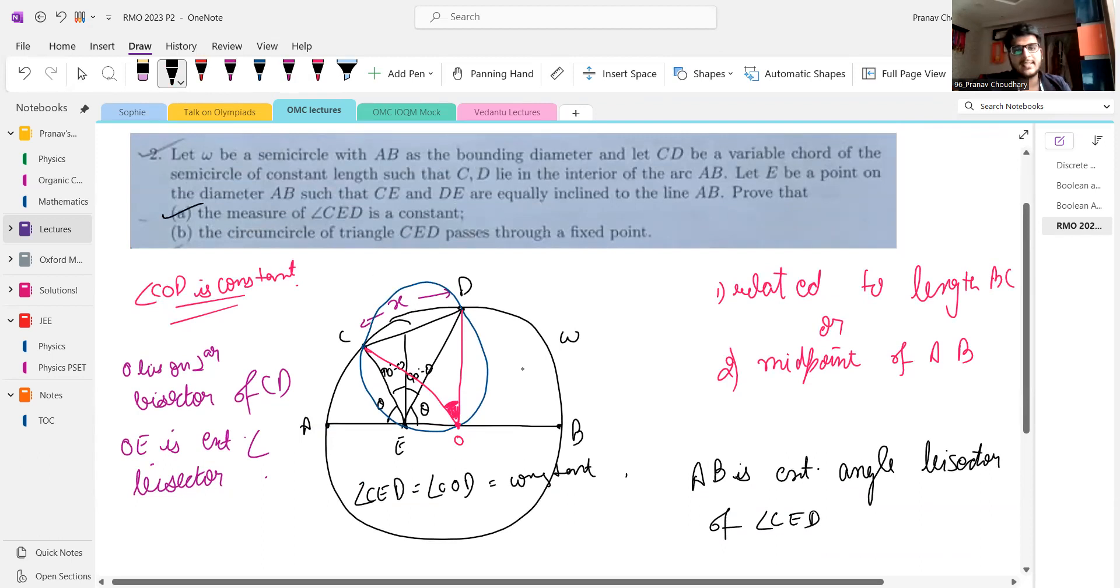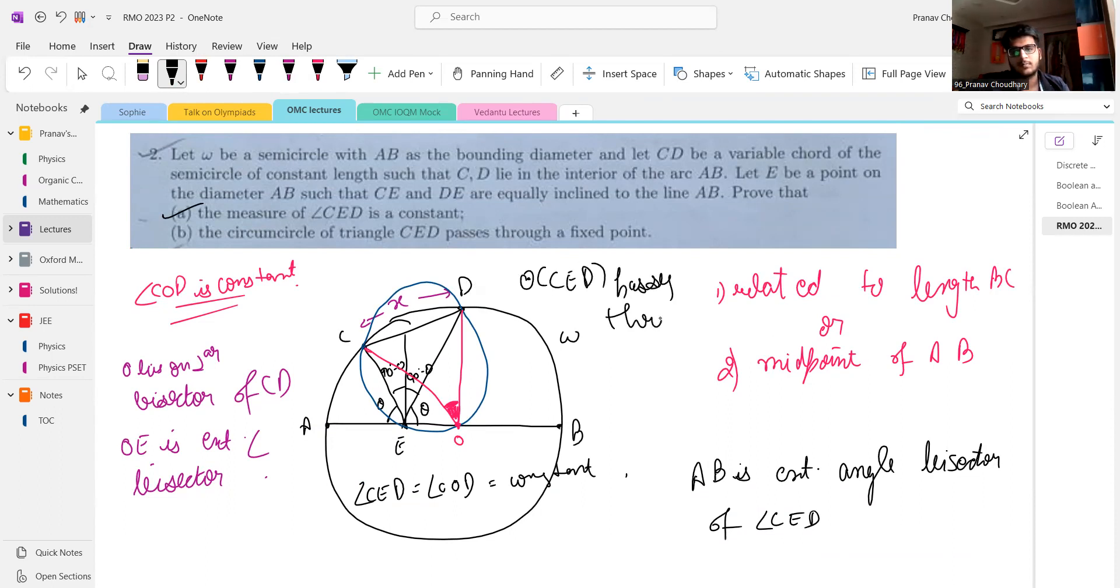Next, you have to prove circumcircle of triangle CED passes through a fixed point. The circumcircle of CED passes through O. So that is a fixed point, like O is fixed. So CD passes through O. That's a fixed point. So yes, we are done with the problem. This was comparatively an easier problem.